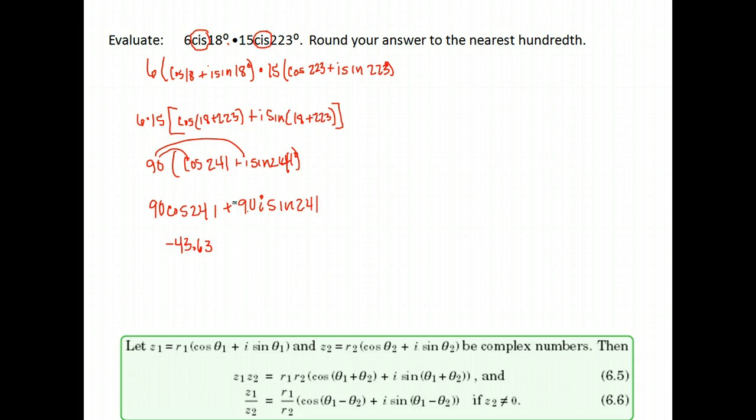And 90 times the sine of 241 is also negative, so I'm just going to put negative here, and it's 78.72. And don't forget the i. So this would be our answer rounded to the nearest hundredth.